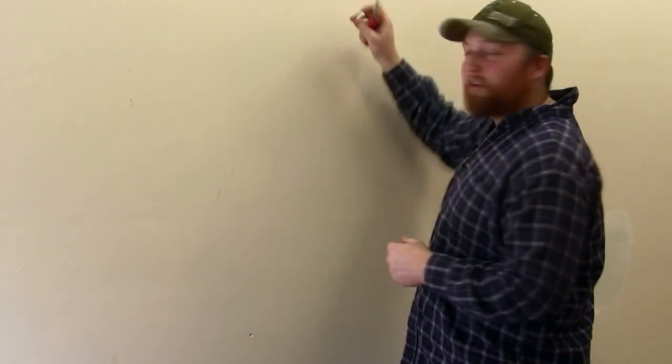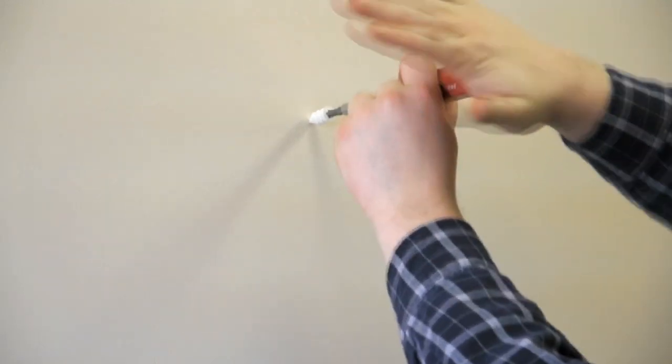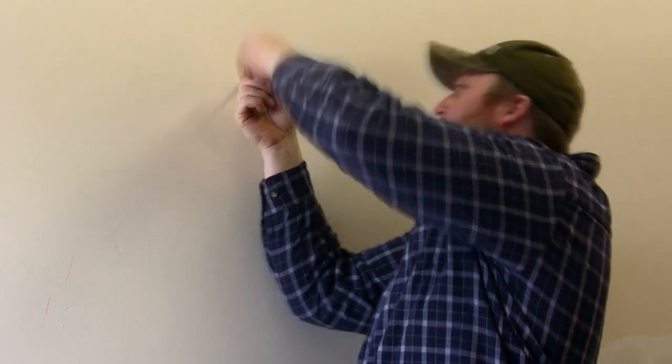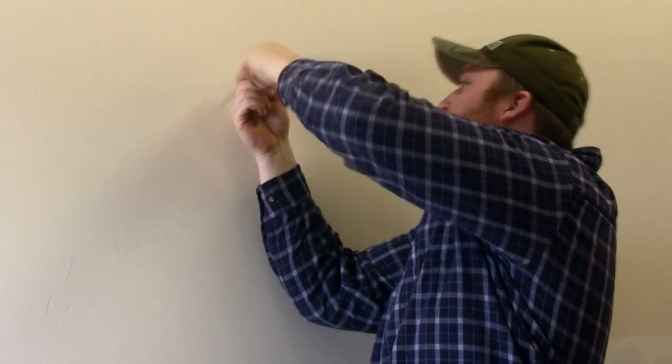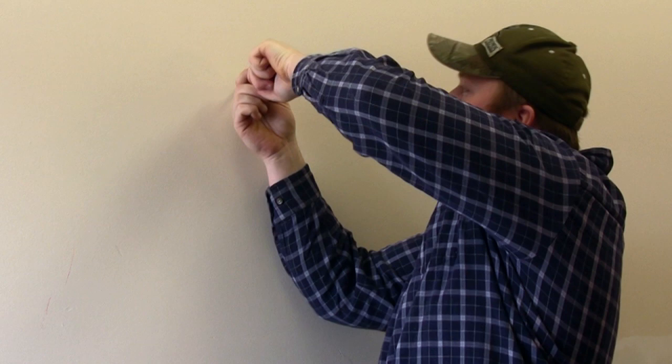Now that we have the location we want to hang our painting, it's very easy. Just take your wall anchor, place it on the wall, and give it a nice little pop. And screw it into place. Make sure that it goes flush with the wall.